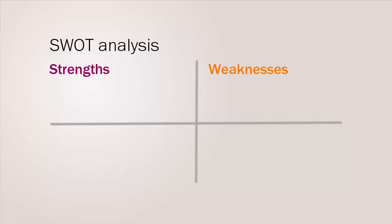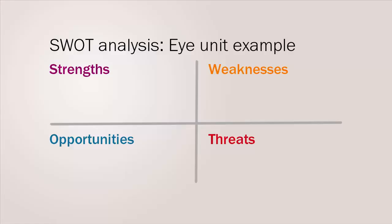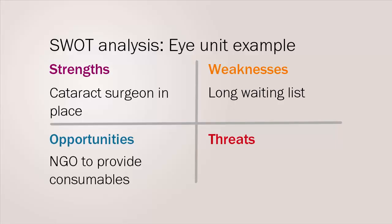A useful tool to support a situation analysis is a SWOT analysis. A SWOT identifies an organization's internal strengths and weaknesses as well as the external opportunities and threats. For example, a SWOT analysis of an eye unit might identify a strength as having a well-trained cataract surgeon already in place, a weakness as having a long waiting list caused by lack of consumables and not enough available surgery time, an unexplored opportunity as an NGO which could provide consumables, and a threat as a fear of eye surgery amongst many in the local population.